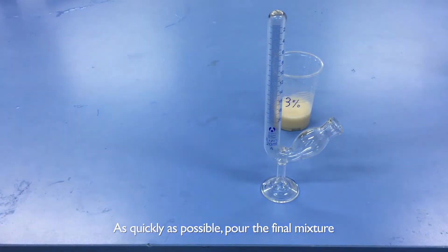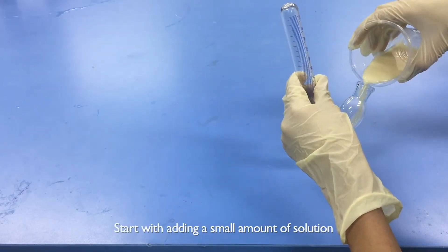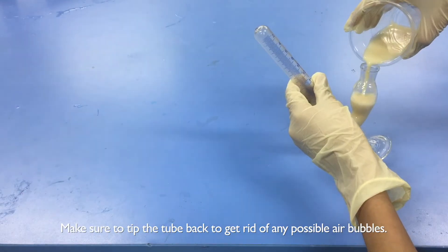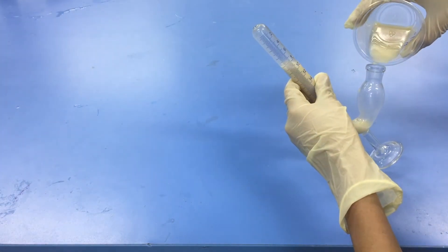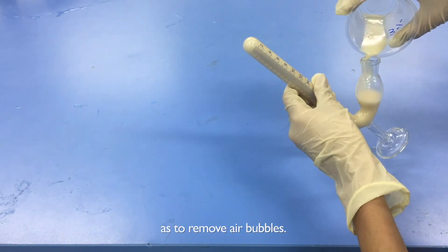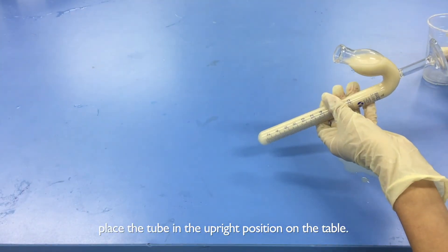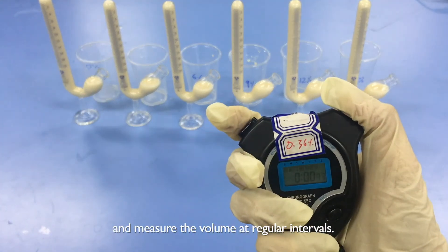As quickly as possible, pour the final mixture into all fermentation tubes. Start with adding a small amount of solution to the fermentation tube. Make sure to tip the tube back and get rid of any possible air bubbles. Add the rest of the mixture, constantly keeping the tube tilted as to remove air bubbles. When all the liquid is added, place the tube in the upright position on the table. Start the stopwatch and measure the volume at regular intervals.